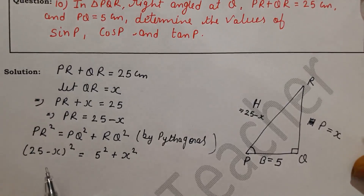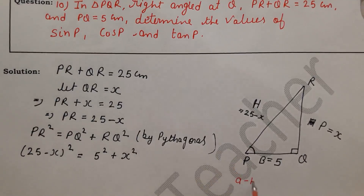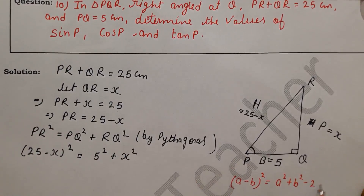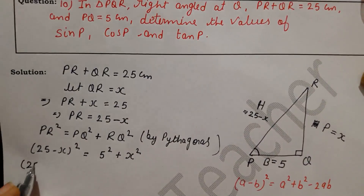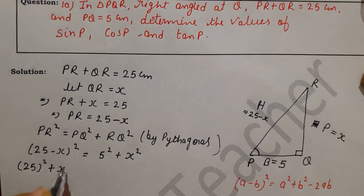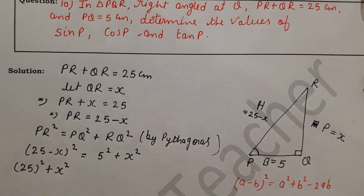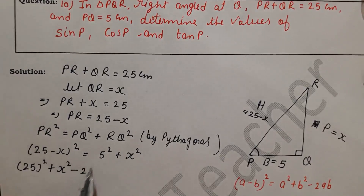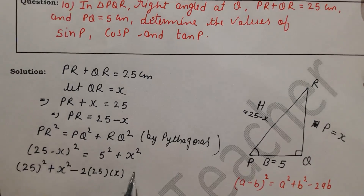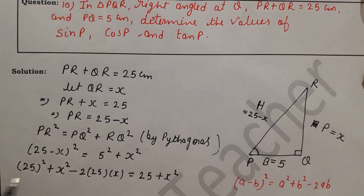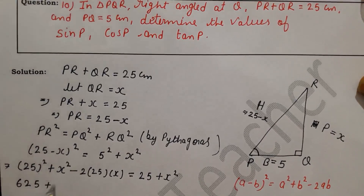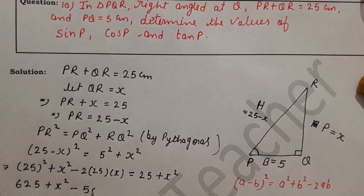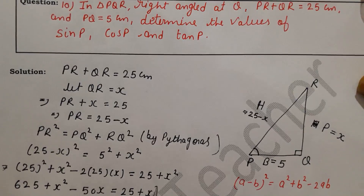Now let's substitute: (25 minus x) whole square equals 5 squared plus x squared. Expanding using the identity A minus B whole square equals A squared plus B squared minus 2AB: 625 plus x squared minus 50x equals 25 plus x squared.